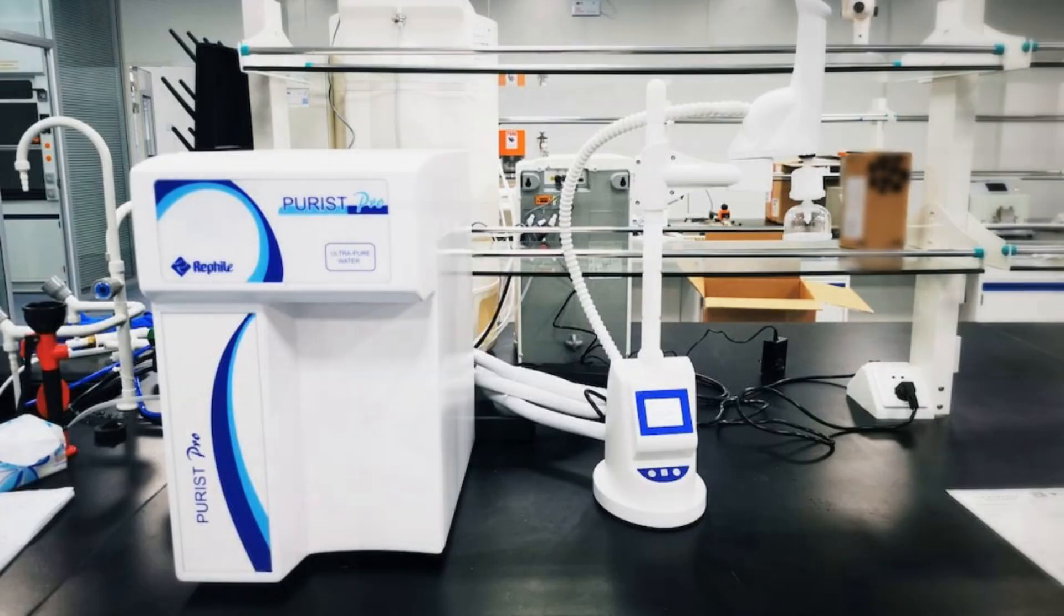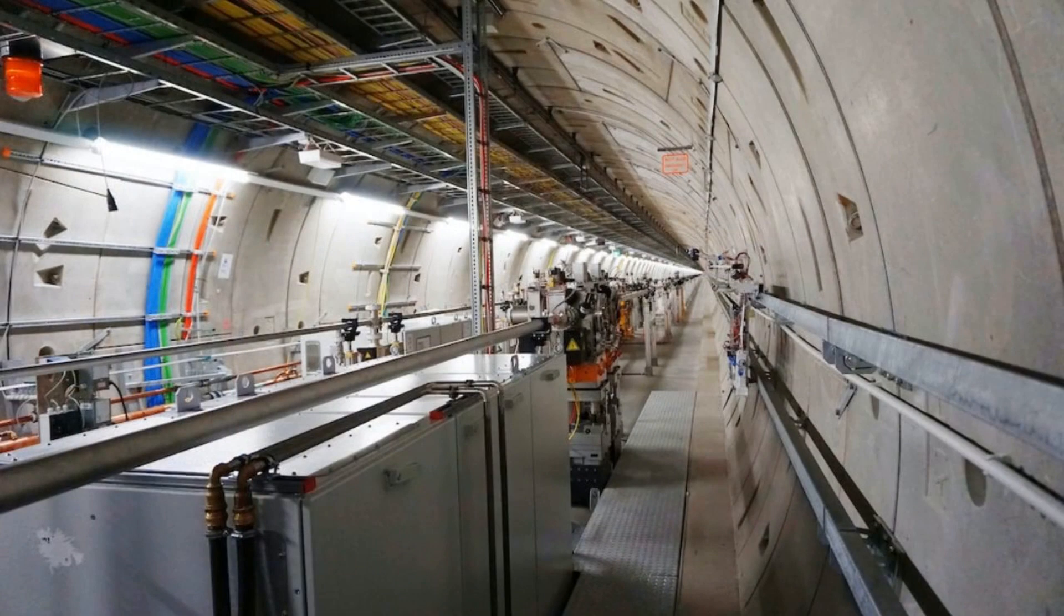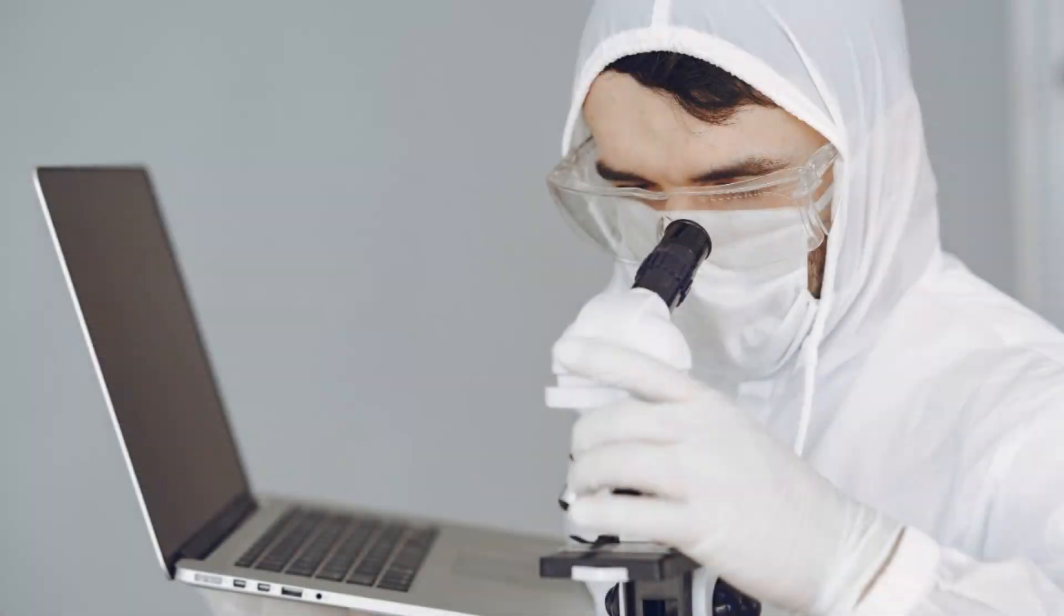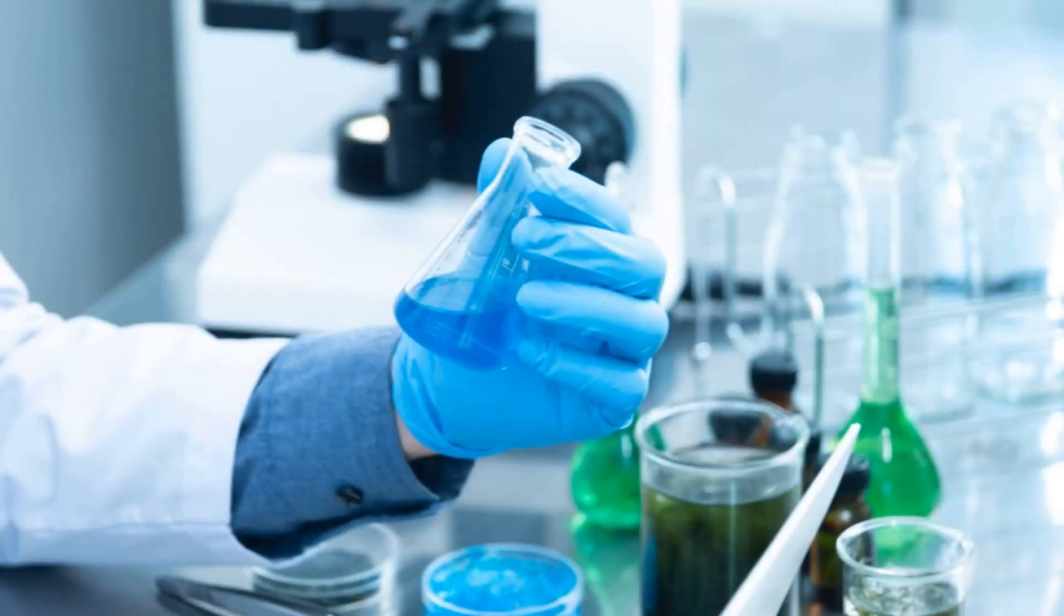Analytical chemistry involves the separation, identification, and quantification of matter. It involves the use of classical methods along with modern methods involving the use of scientific instruments. Analytical chemistry involves the following methods.